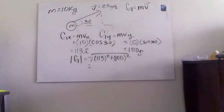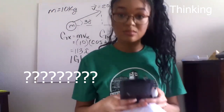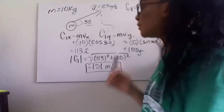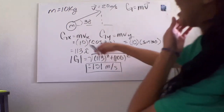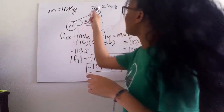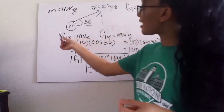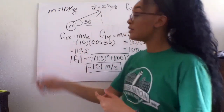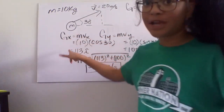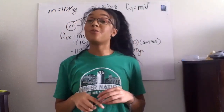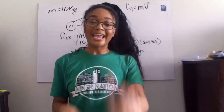Five hours later... I just finished doing a linear momentum problem where our mass of 10 kilograms was traveling at a velocity of 20 meters per second. I calculated the linear momentum in both the x-direction and the y-direction because it's going at a 30-degree angle. Then I took the magnitude of the x and y directions and found that our overall linear momentum of the 10-kilogram mass is 151 kg·m/s.